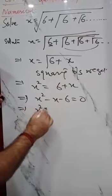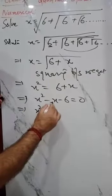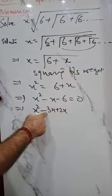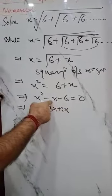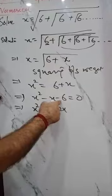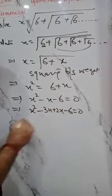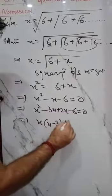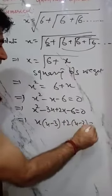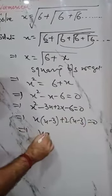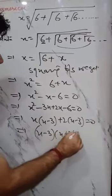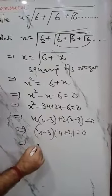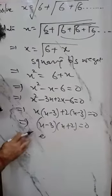Let us solve by factorization. We split -x as -3x + 2x, since -3x + 2x = -x and (-3x)(2x) gives -6. This gives us (x - 3)(x + 2) = 0.